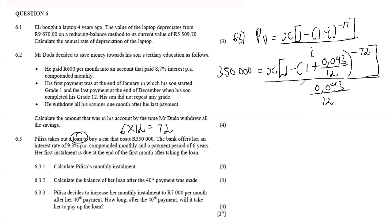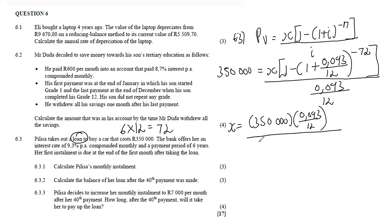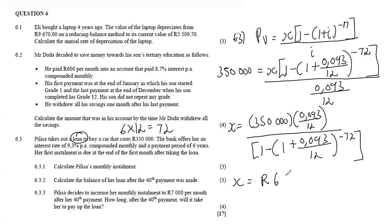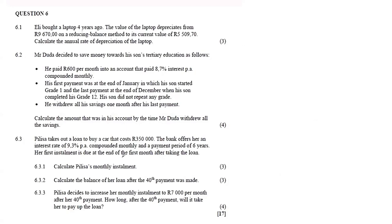To calculate x, we cross-multiply: x equals 350 000 times (0.093/12), divided by [1 minus (1 plus 0.093/12)^(negative 72)]. Punching that into the calculator gives x equals R6 361.18. That is Pelisa's monthly installment for paying off the loan.